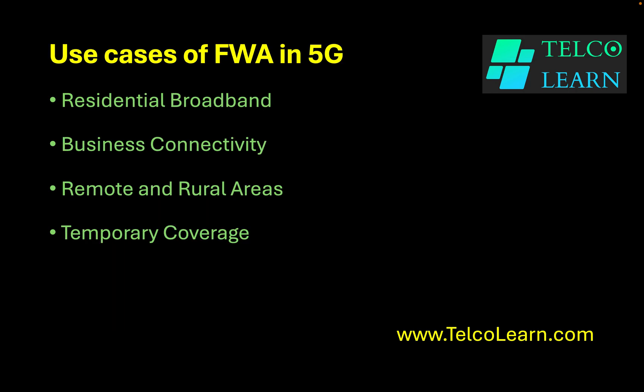What can be the use cases of FWA in 5G networks? Residential broadband is one of the important use cases of fixed wireless access. In addition to that, it can also be used to provide business connectivity, providing connectivity to remote and rural areas, and also providing temporary coverage for events and temporary arrangements.